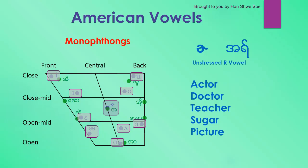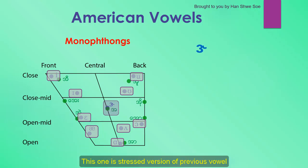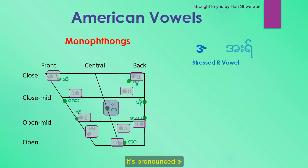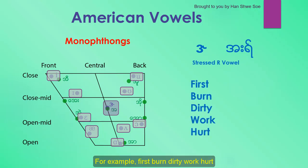The next one is the stressed version of the previous vowel. You just have to pronounce it longer and louder. It's pronounced as a stressed R sound. For example: first, burn, dirty, work, hurt.